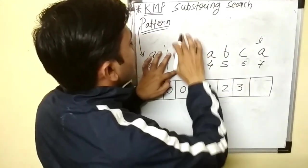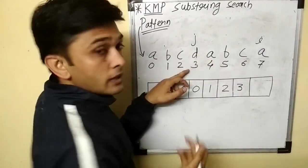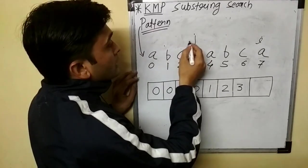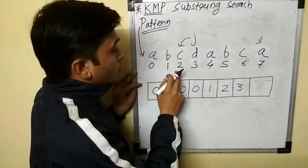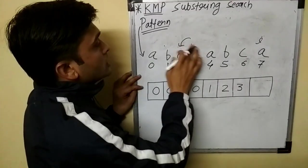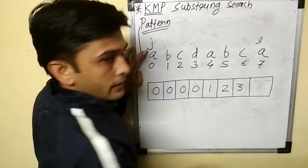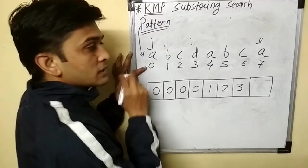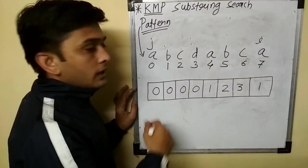Continue: B and B match — write j's position plus 1, which is 1+1=2, increment both. Next characters match — write 2+1=3, increment both. Now compare i and j: A and D — no match. We go to the previous character to j, which is C, and check the array value at index 2 — it is 0. So j goes to index 0. Compare j at index 0 with current i: A and A — match. Write 0+1=1. This is how you build the array.